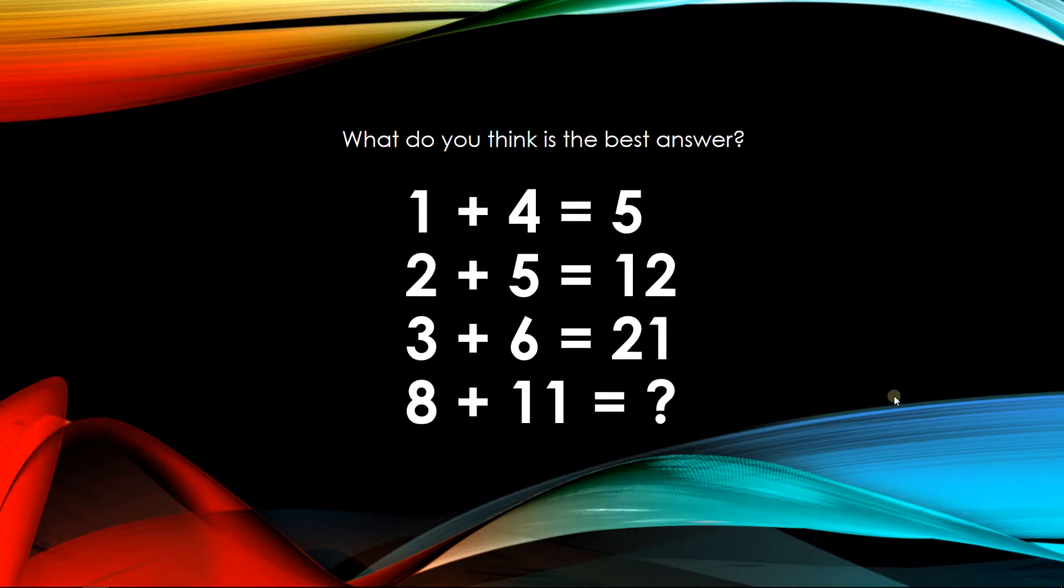Now as we look into this question, your answer might be 1 plus 4 equals 5, and 5 plus the second row will be 12, and the answer on the second row plus the question on the third row will become this answer and goes on like this. Okay, so your answer might be 40.